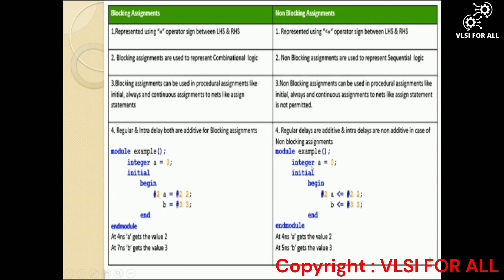In the non-blocking assignment example, 2 is assigned at 4 nanoseconds — that is, #2 plus #2 — because regular delays are additive. Since intra-delays are not additive, 3 is assigned at 5 nanoseconds. That is the proper answer for this question.